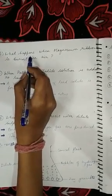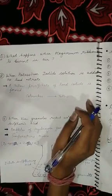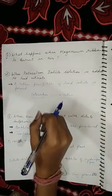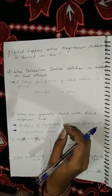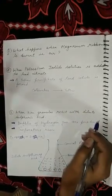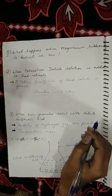When magnesium ribbon is burned in air, we get a dazzling white flame and the product magnesium oxide. From this activity, we understand that chemical reactions involve chemical changes. In physical changes, no new substance is formed — only state changes occur. But in chemical reactions, new substances are formed, as magnesium and oxygen combine to form magnesium oxide.